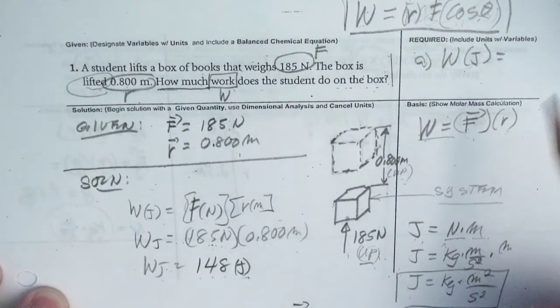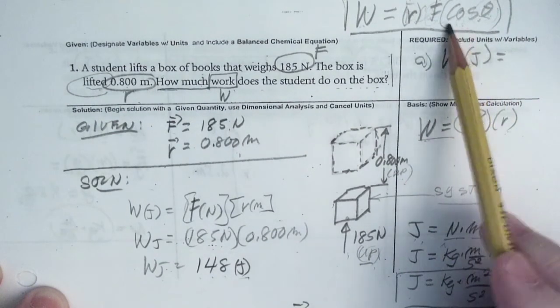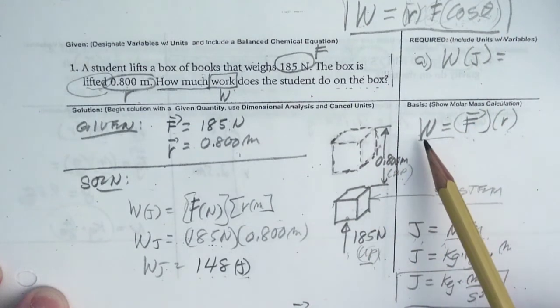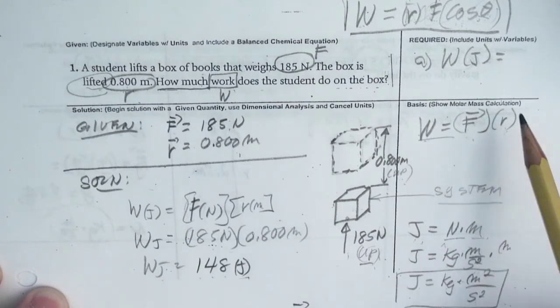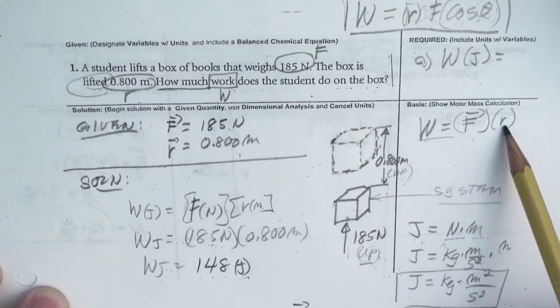Otherwise, that becomes zero. So if that angle is zero, like in this first one, our formula is just work equals force times distance. Force is in newtons, distance is in meters, so it's newton-meter.